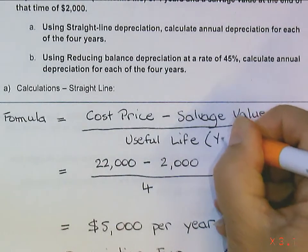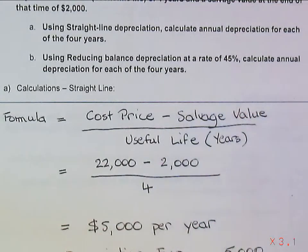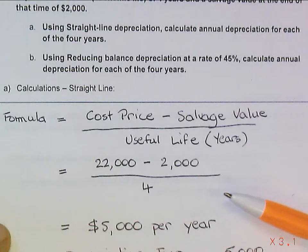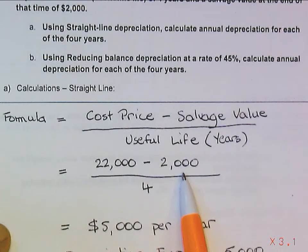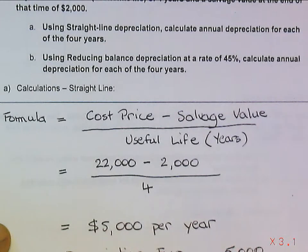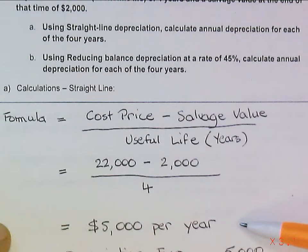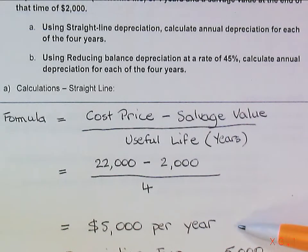This figure is in years. It can be otherwise if you've specified it that way, but the useful life we're using here is in years. The cost price of the machine purchased by Dawson Enterprises was $22,000, and the salvage value was $2,000, with a useful life of 4 years. It's not exactly rocket science — $20,000 divided by 4 is $5,000 per year, which is the amount of expense we would charge at the end of each year.